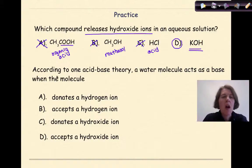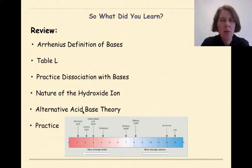Let's look at the other question. According to one acid-base theory, a water molecule acts as a base when the molecule donates a hydrogen ion, accepts a hydrogen ion, donates a hydroxide ion, and accepts a hydroxide ion. Well, C and D are out because the Bronsted-Lowry theory of acids and bases only deals with the transfer of hydrogen ions. So we're looking at what is a base. If you chose B, you are correct because water can accept a hydrogen ion because of the presence of the lone pair and be considered basic.